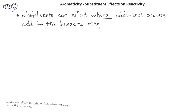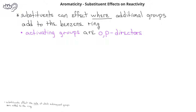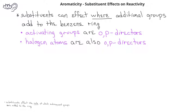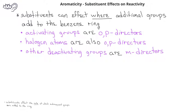We've already seen that substituents can affect the rate at which subsequent groups are added to the benzene ring. However, it's also true that substituents can affect where additional groups are added. All activating groups will direct new groups to either the ortho or para position relative to the group already on the ring. In addition, halogen atoms, which are slightly deactivating but do withdraw electrons from the ring, will also be ortho-para directors. The other deactivating groups will be meta-directors.